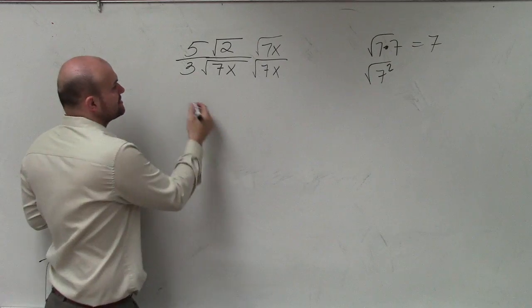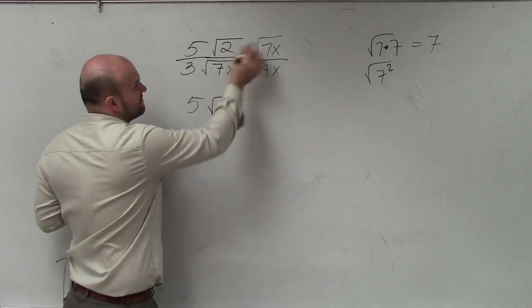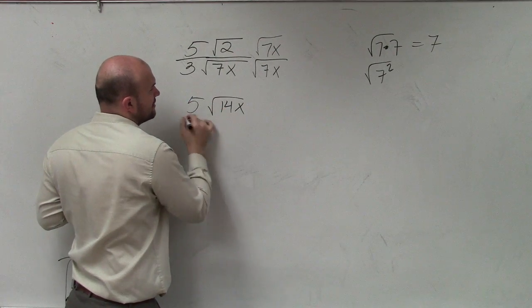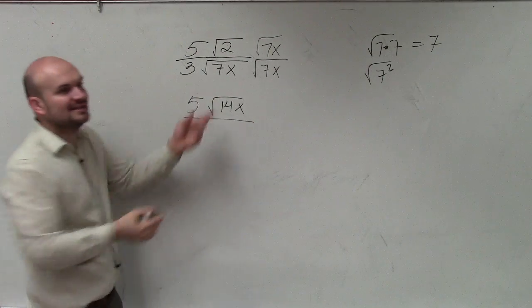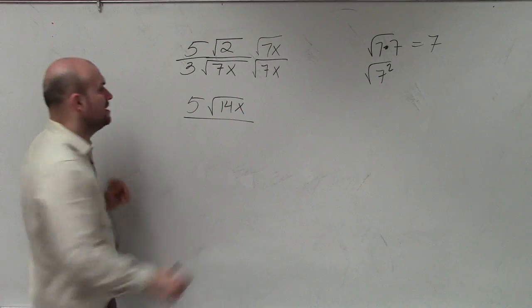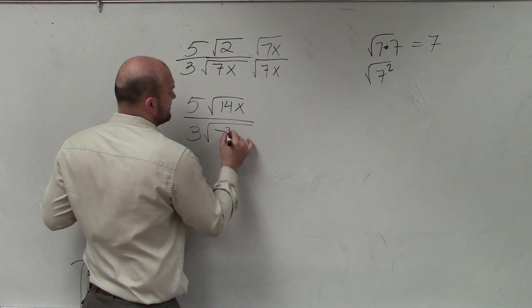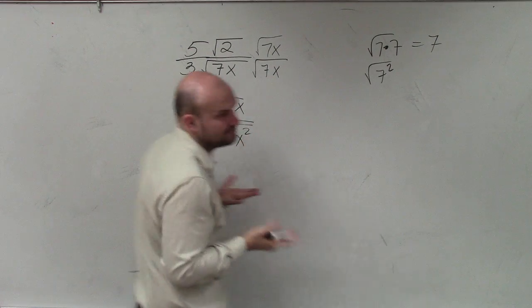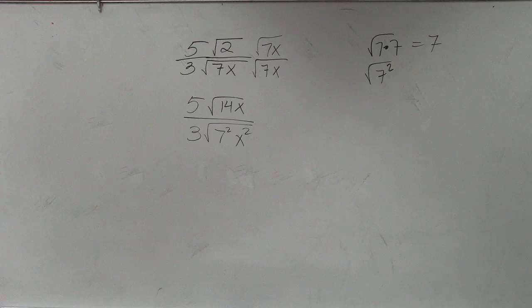So now, let's look at what happens. So I have 5 times the square root of 7 times 2 is 14x. On the bottom here, I could write this as 7 times 7 or x times x, but I'm going to write it as 3 times the square root of 7 squared times x squared. Right? You could write it 7 times 7, x times x, but I'm going to write them as squares.